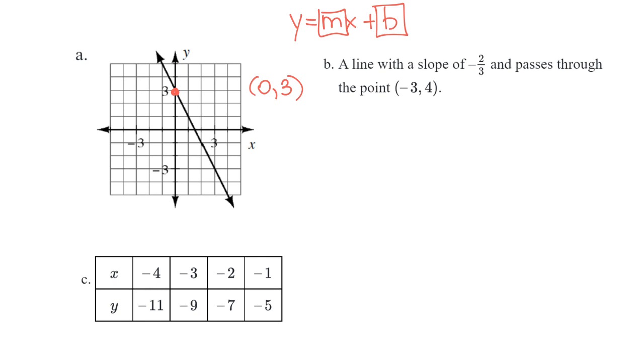Now I'm going to find another point on this graph so that I can find the slope. Well, as I look along the graph, I notice right here, the graph of the line crosses the grid at a point.